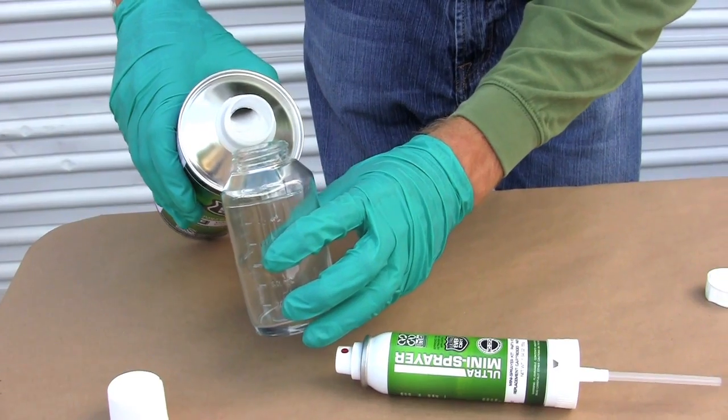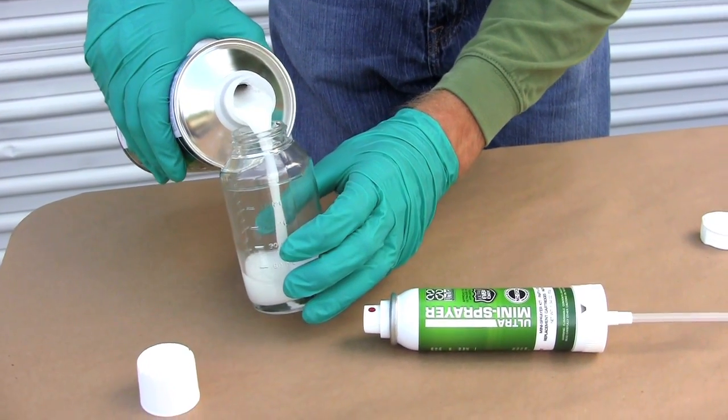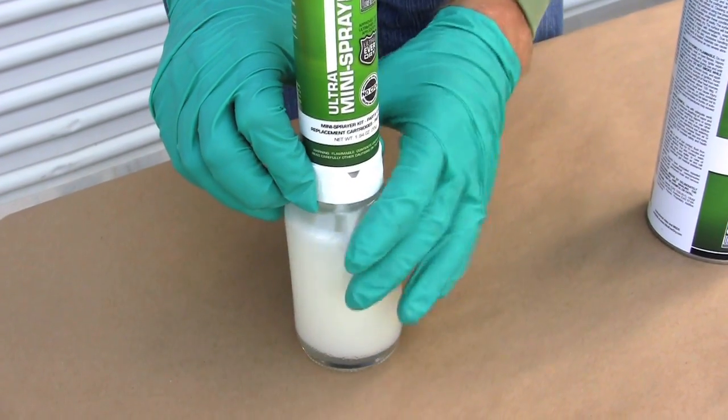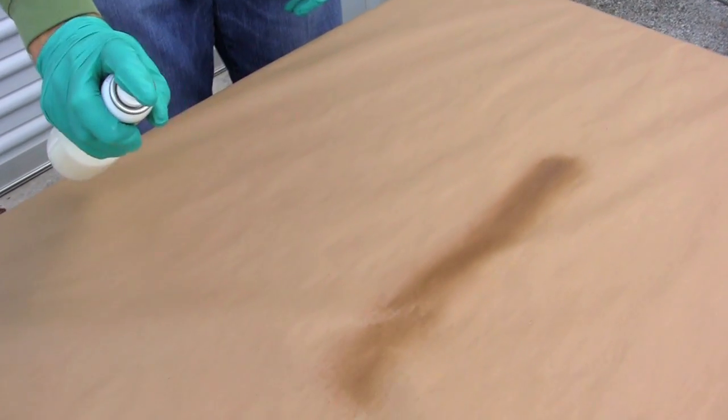After shaking the Everdry container well and filling the glass jar at least halfway, attach the power unit to the glass jar. Test spraying is recommended.